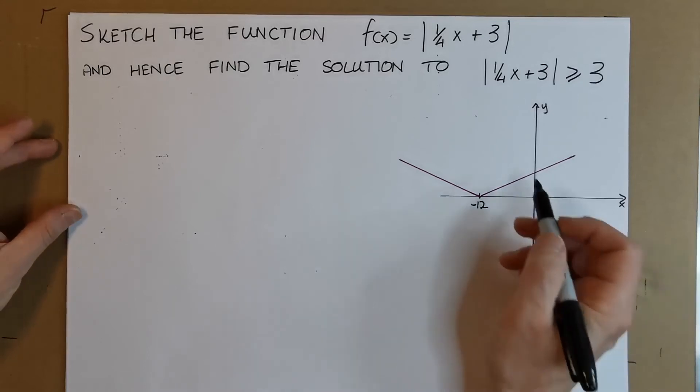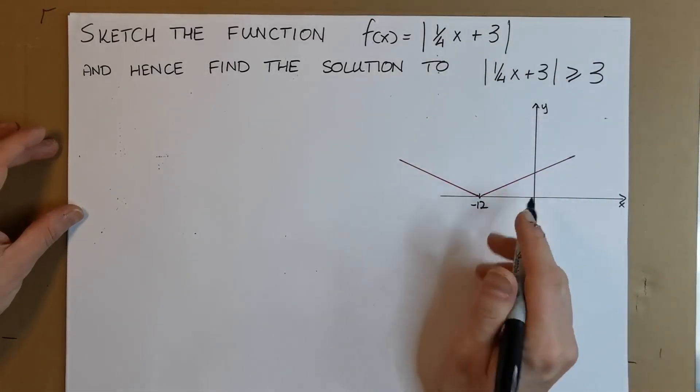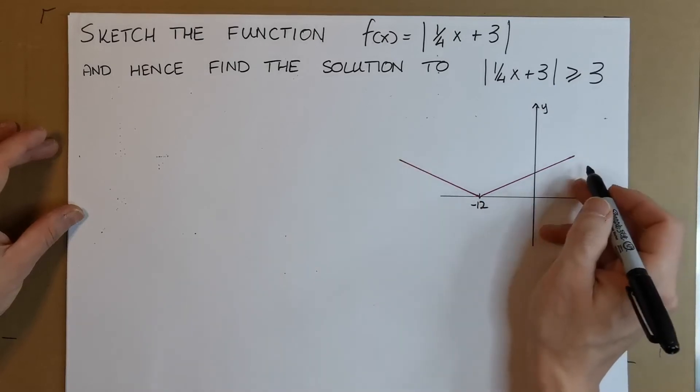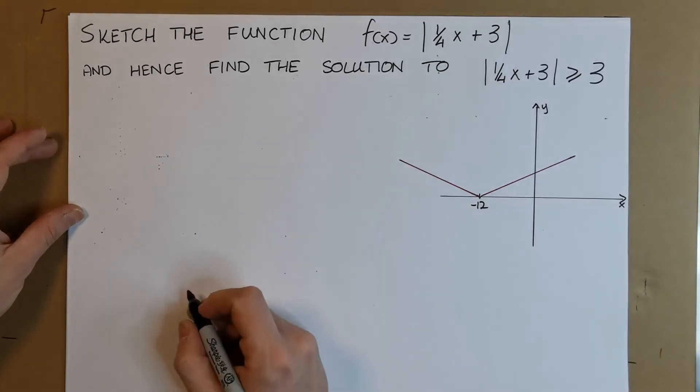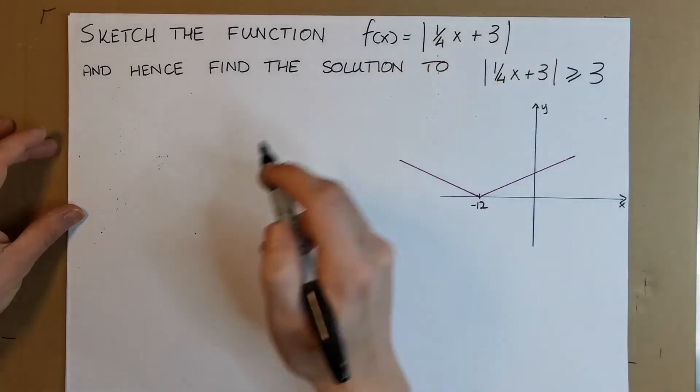What you could do is recognize that everything inside the modulus brackets will always be positive, and modulus graphs always have this V-shape. How do you figure out where it touches the x-axis? It touches the x-axis when the stuff inside equals zero.